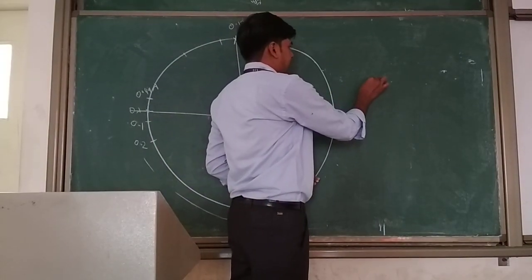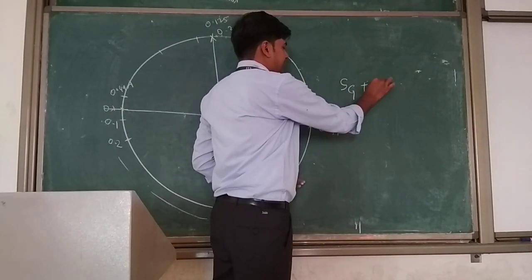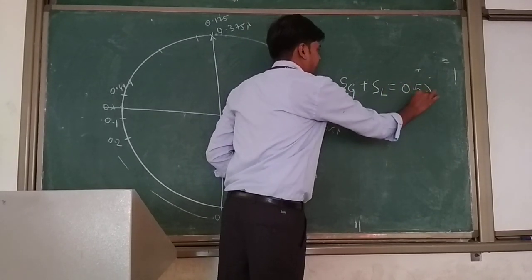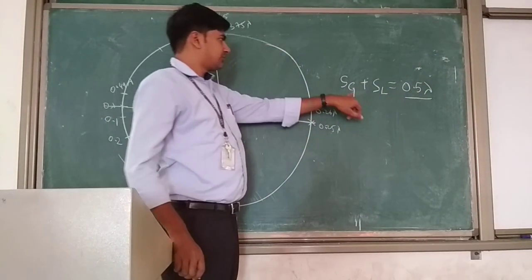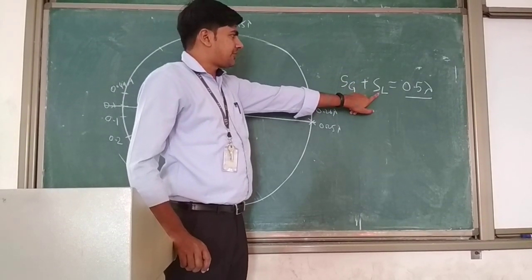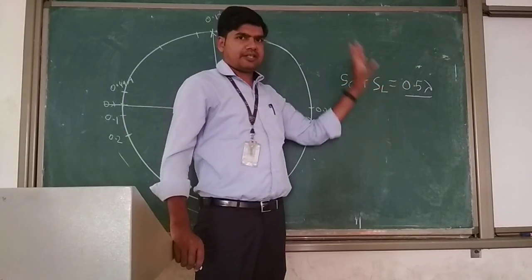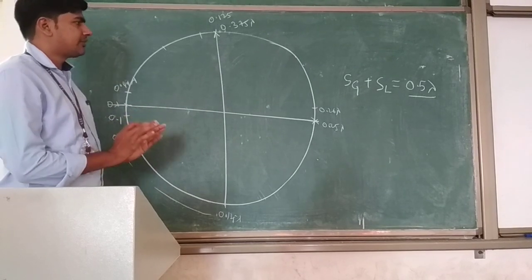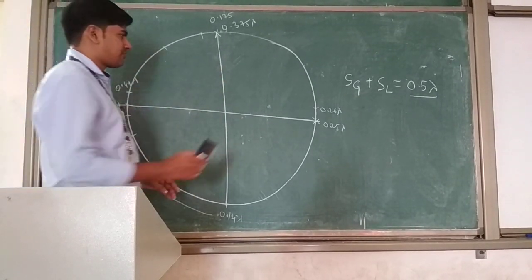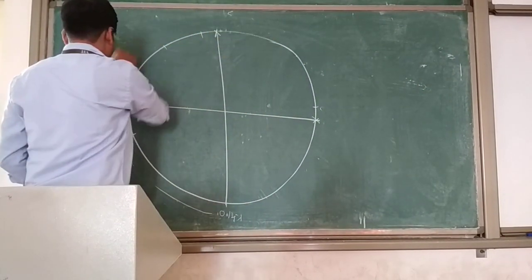Both scales are represented separately to make your work easy. But if you know one scale, you can find the other just by using this relationship: the scale towards generator plus the scale towards load equals 0.5 lambda. So if you don't know the generator scale, just find the load scale and take the difference. That is about the representation of load and generator movement. Now we are going to solve problems.